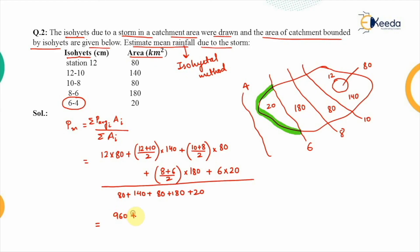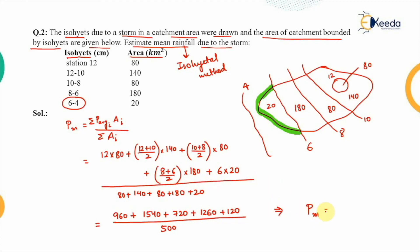Carrying out the calculations: (12×80) + (11×140) + (9×80) + (7×180) + (6×20) = 960 + 1540 + 720 + 1260 + 120 = 4600, divided by 500. The mean precipitation comes out to be 9.2 centimeters. So the average precipitation within this catchment area is 9.2 centimeters, completing the numerical on both methods.